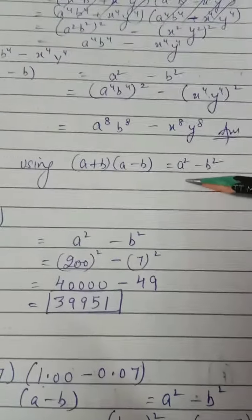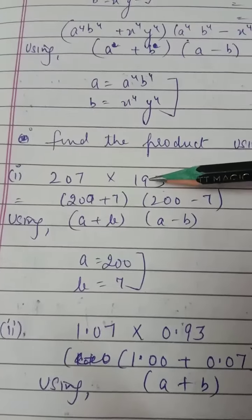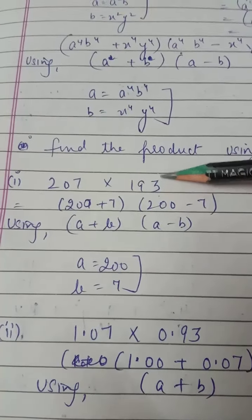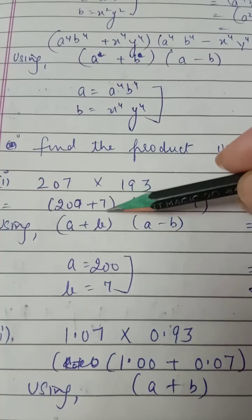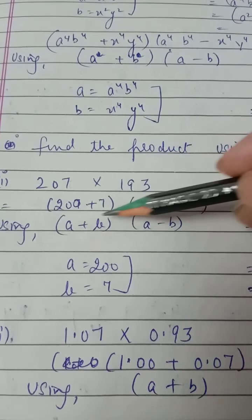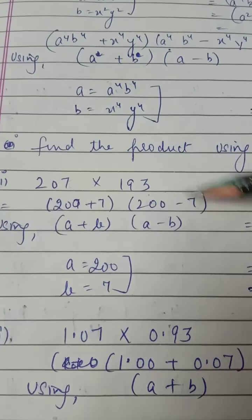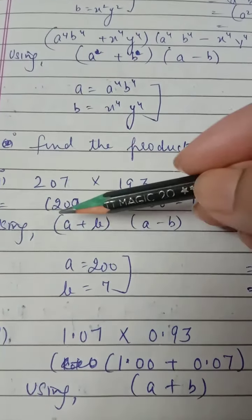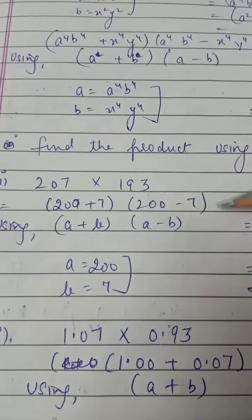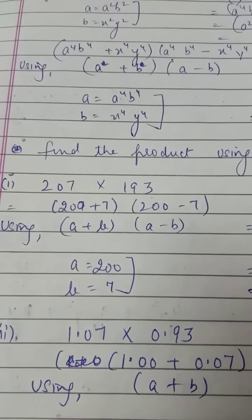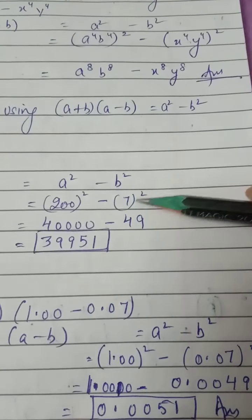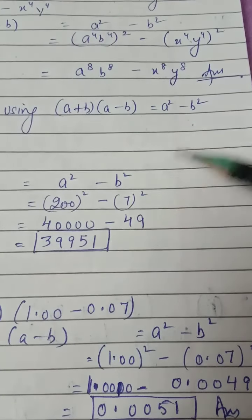Now finding the product using (a + b)(a - b) = a² - b², but the question is not in that form directly. We have to split the terms: 207 × 193 becomes (200 + 7)(200 - 7). The value of a is 200 and the value of b is 7. Squaring the first minus squaring the second gives the answer 39,951.